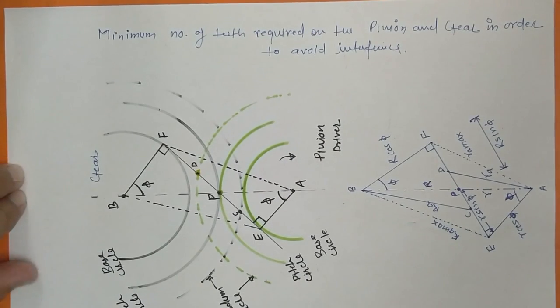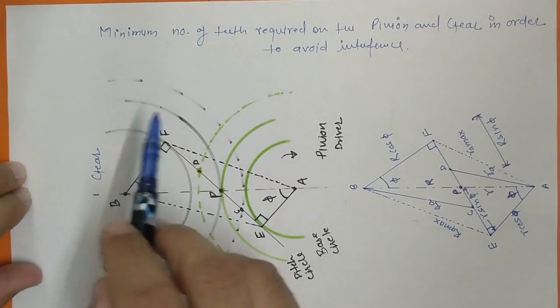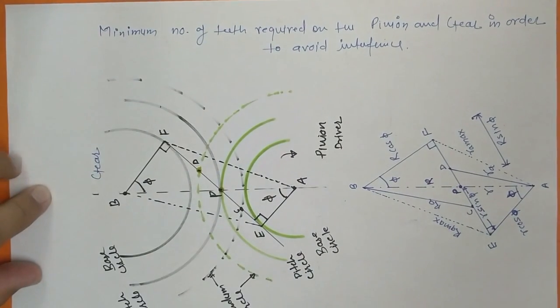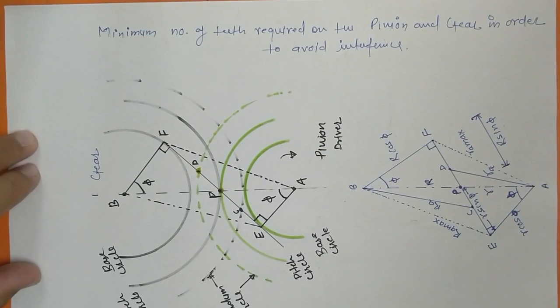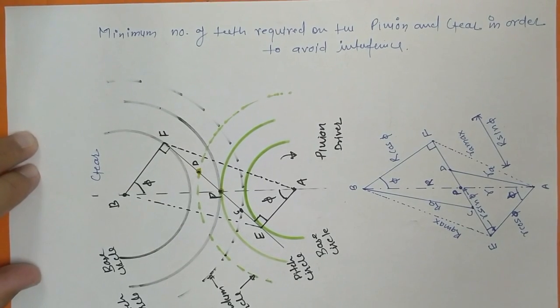In this lecture we are going to discuss the minimum number of teeth required on the pinion and gear in order to avoid the interference.